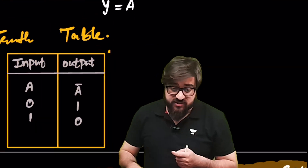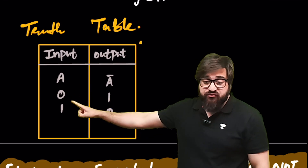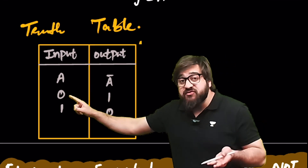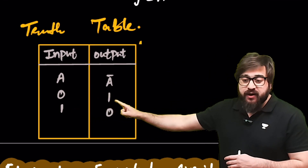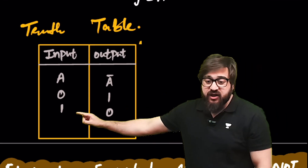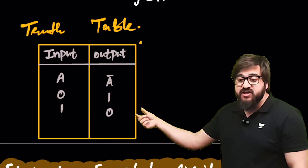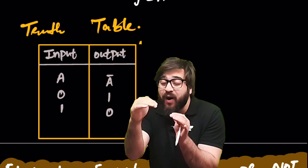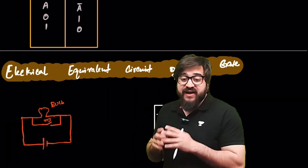The truth table of the NOT gate: if we give input 0, the output is 1 because A-bar of 0 is 1. If we give input 1, the output is 0 because 1-bar is 0.